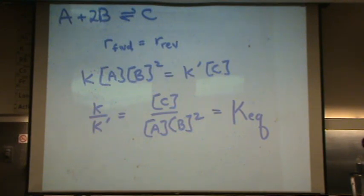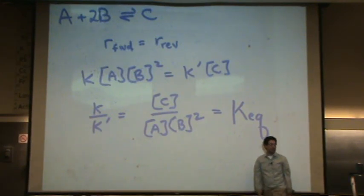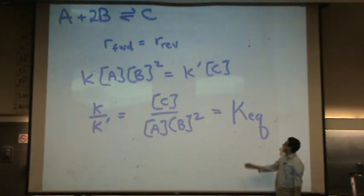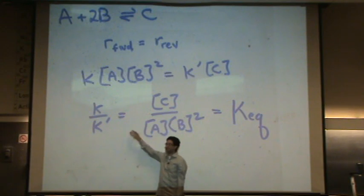That's how all the stuff you did in 2B - concentration of the products over concentration of the reactants raised to the power - those were all elementary steps, supposedly. And these rate constants are just Keq.